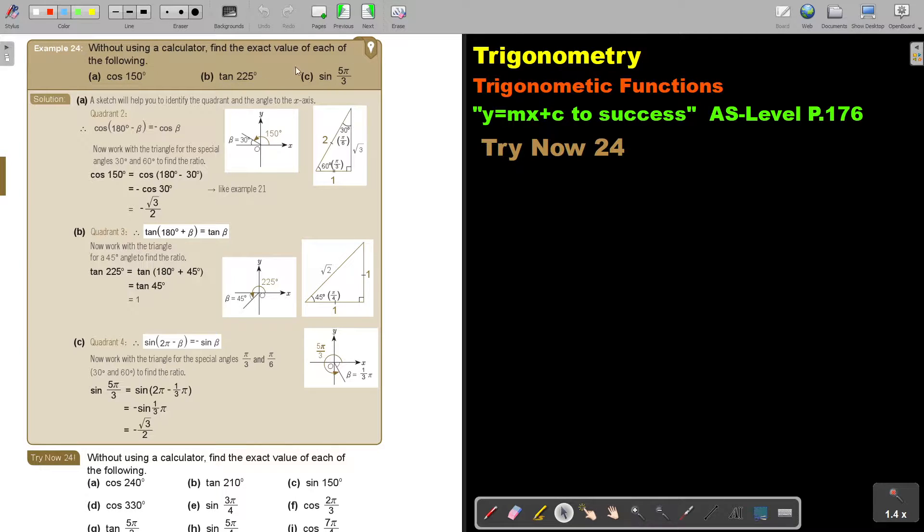If you look at these examples, you will understand why we were writing it's always in terms of the acute angle because then we can use the special angles. So a sketch will help you to identify the quadrant and the angle to the x-axis. So if I look at this, beta will be 30. I know it's in this quadrant and cos is in this quadrant negative. And this is now exactly why I was doing the previous videos.